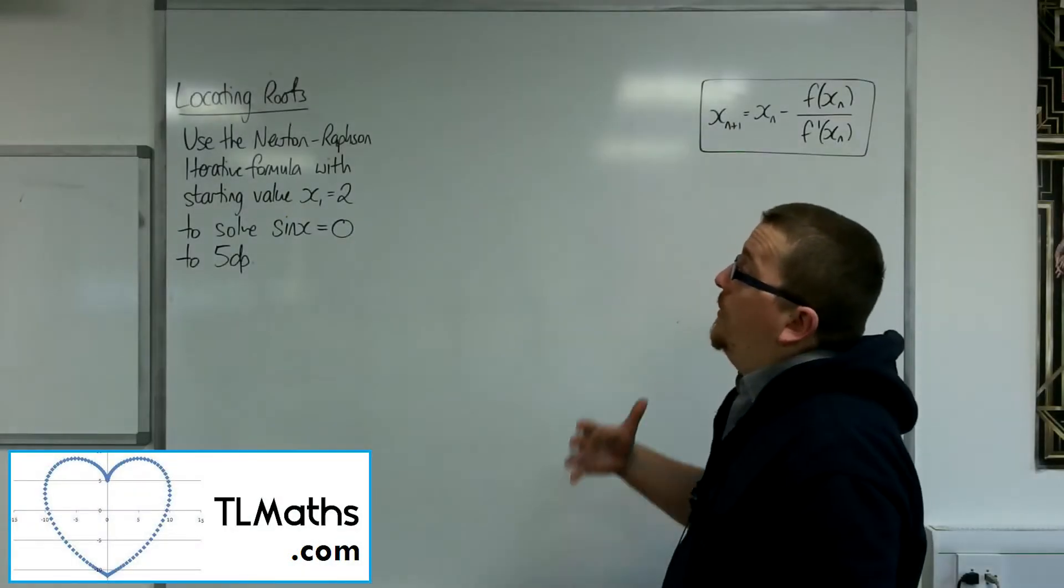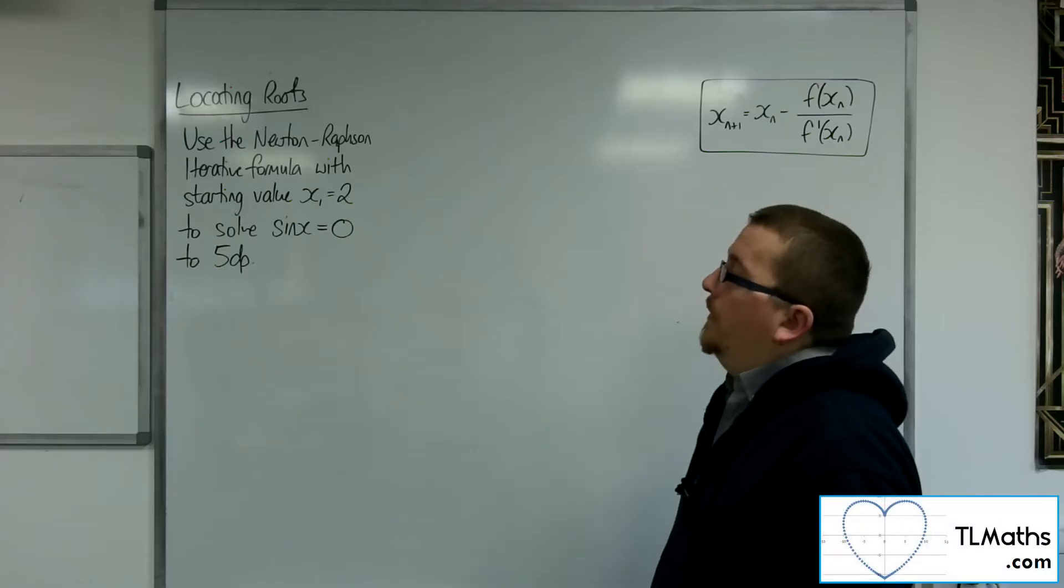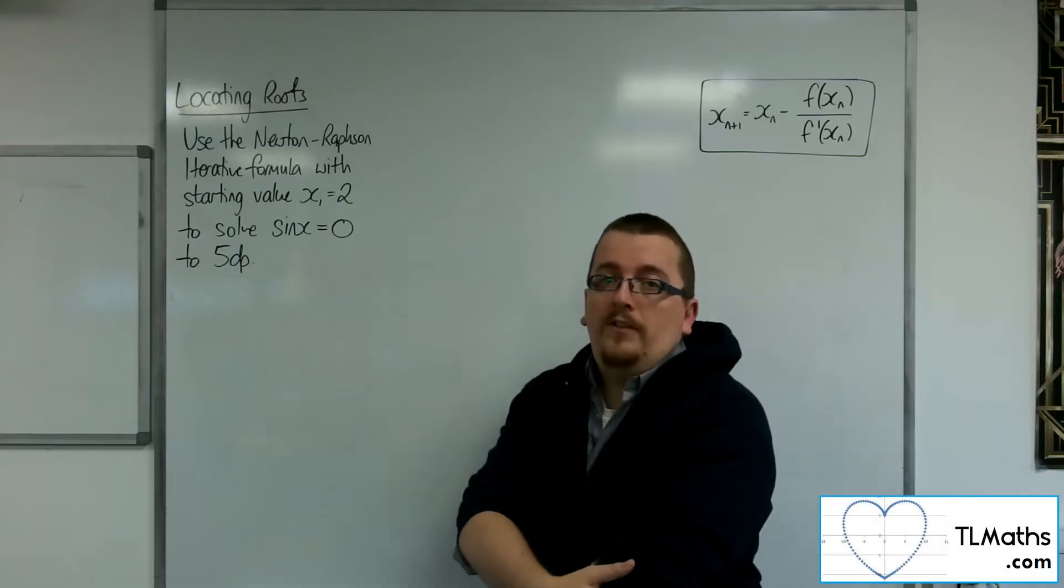OK, so let's say I want to use the Newton-Raphson iterative formula with starting value x1 equals 2 to solve sine x equals 0 to 5 decimal places.